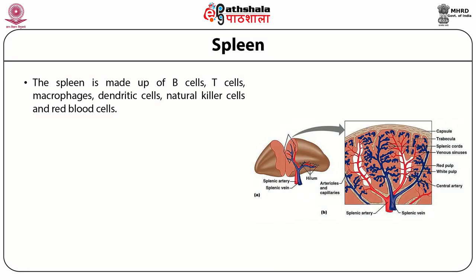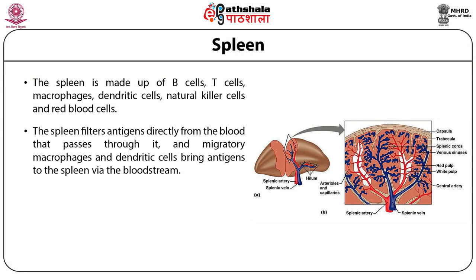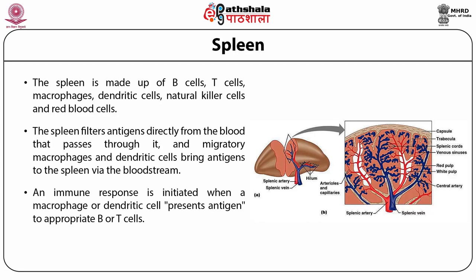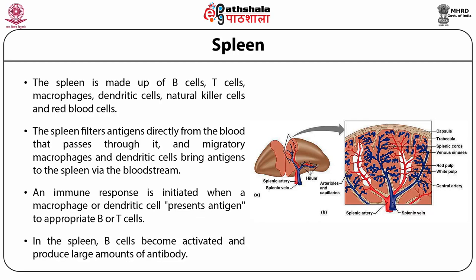The spleen is made up of B cells, T cells, macrophages, dendritic cells, natural killer cells, and RBCs. The spleen filters antigens directly from the blood passing through it, and migratory macrophages and dendritic cells bring antigens to the spleen via the bloodstream. An immune response is initiated when a macrophage or dendritic cell presents antigen to appropriate T or B cells. In the spleen, B cells become activated and produce large amounts of antibody.